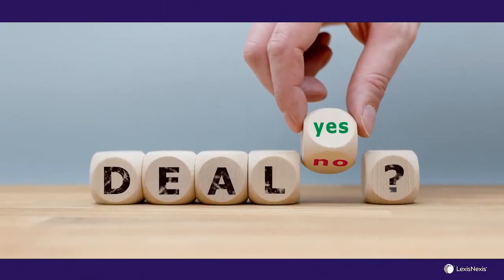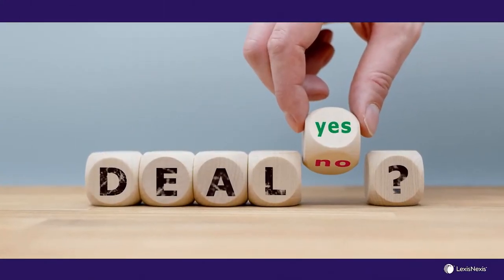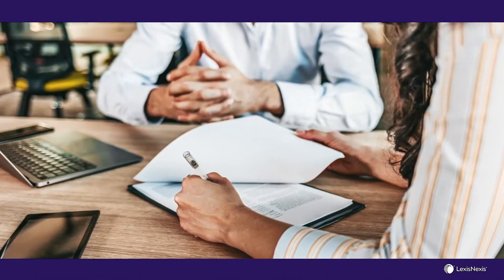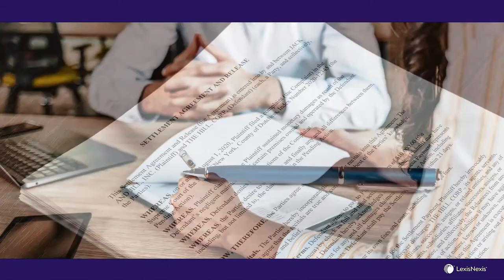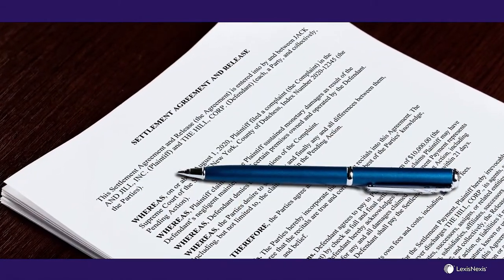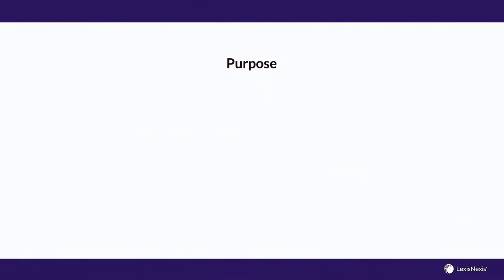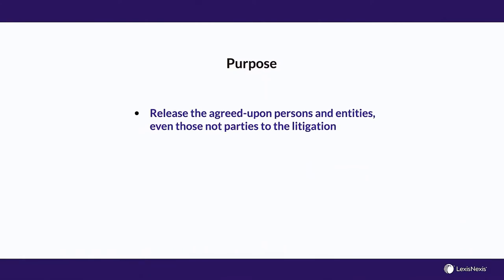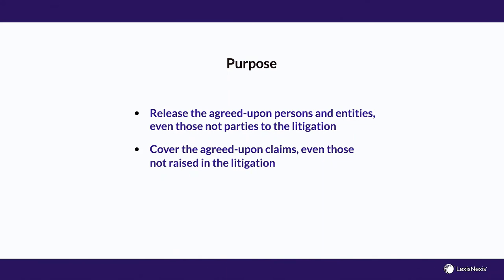After consulting with your client, you obtain authority to settle the case. The defendant drafts the settlement agreement and sends the draft to the plaintiff for review. Negotiation of the terms is most often minimal. This is a settlement agreement. The purpose of your settlement agreement is to release the agreed-upon persons and entities, even those not parties to the litigation, and cover the agreed-upon claims, even those not raised in the litigation.